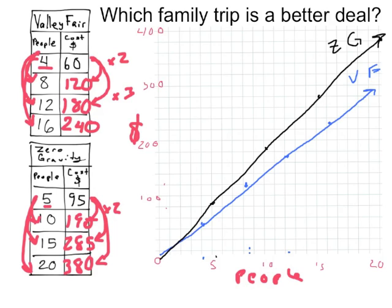So now, looking at this, which family trip is the better deal? One might be more fun than the other, but which one's going to be cheaper? Hopefully you can tell that the prices for zero gravity are higher in the picture than the ones for Valleyfair. So you should be able to tell that zero gravity is going to be more expensive because its line is higher on the price. So Valleyfair is cheaper. You can also use a graph to compare ratios.